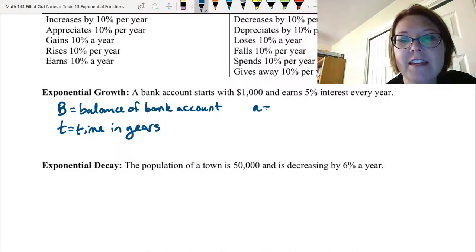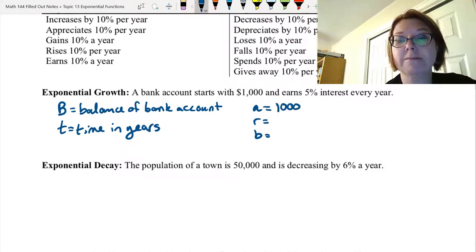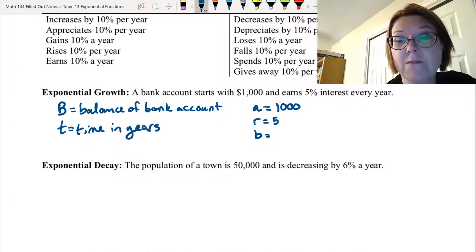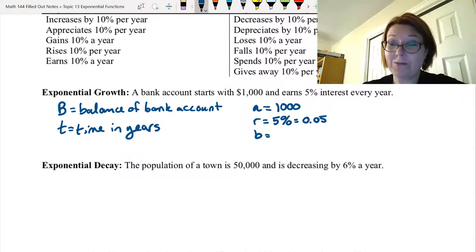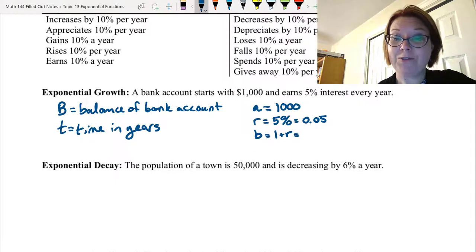All right, so now let's find A, R, and B. So A is the initial value. In this case, that's $1,000. R is the rate of increase or decrease. So in this case, the rate is 5%. It's a positive 5%. And that's going to be a decimal value of 0.05. B is the same thing as 1 plus R, or what remains after an iteration.